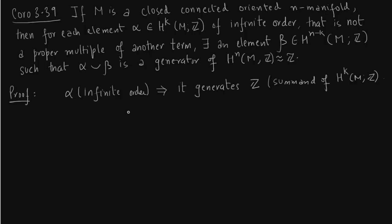So there exists some kind of a homomorphism. There exists a homomorphism from these cohomology groups to integers. So basically α is a generator of this cohomology group. So this will get mapped to generator of integers which is 1.